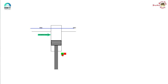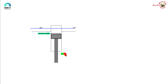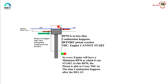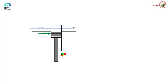What happens if the RPM of the engine is very, very low? You can see that the self-ignition temperature has been attained, the injection has happened, but combustion has happened before the piston has crossed the TDC. The RPM is so low that combustion happens before the piston has reached TDC — the engine cannot start and is stalled. That means there is a minimum RPM required for the engine to start. At this RPM, the piston is able to cross the TDC by the time combustion happens after the ignition delay. This becomes the firing RPM of the engine — if the engine cannot be cranked up to this RPM, the engine will never start.